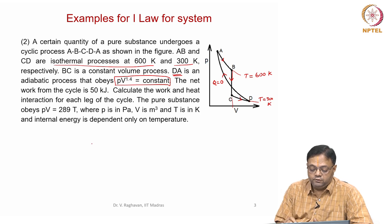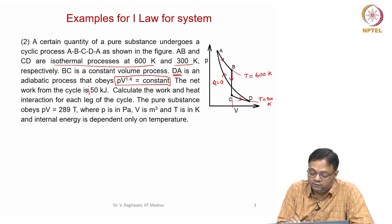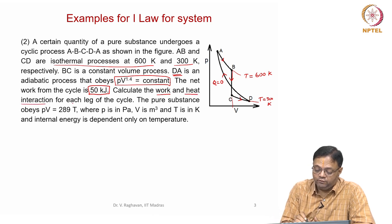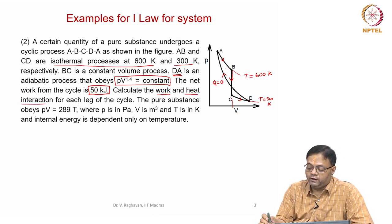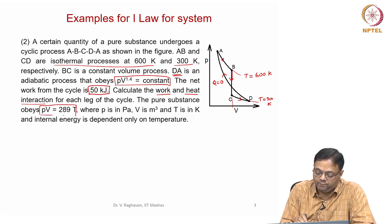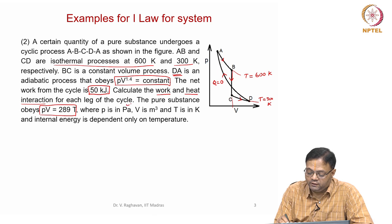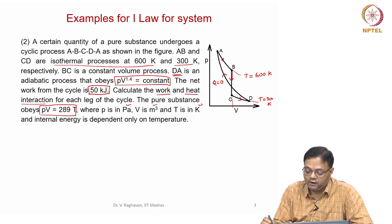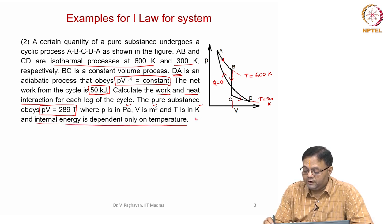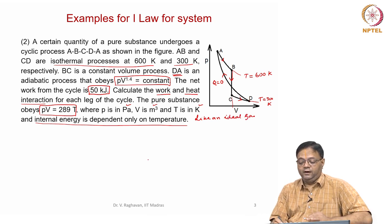The net work from the cycle is 50 kilojoules. We need to calculate the work and heat interaction for each leg of the cycle. The pure substance obeys the equation of state PV = 289T, where P is in Pascals, V is in meter cube, and T is in Kelvin. Since the internal energy depends only on temperature, the pure substance behaves as an ideal gas.